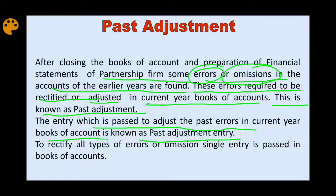These errors can be errors of omission or errors of commission — for example, interest on capital not recorded, or an entry done at a wrong rate. In such cases, we need to rectify them in the current year's books of account.